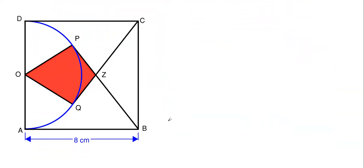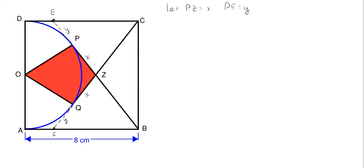Let's apply some information and do some work. We're going to extend our tangent lines and add some new points: point E up here and point F down here. We are going to let PZ equal x, which also means QZ equals x. We are going to let PE equal y, and since we have tangency in the lines stated earlier, FQ is also equal to y.